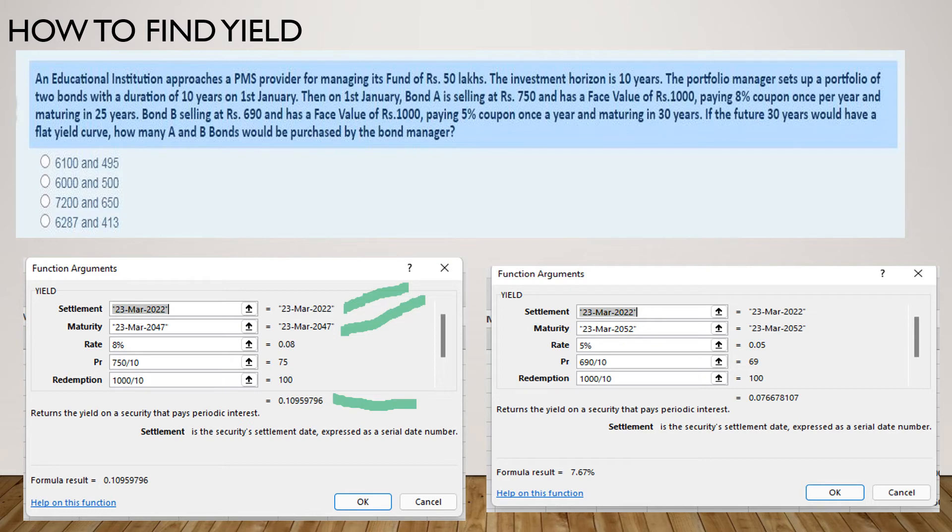If you scroll down here you will get frequency, we put frequency as 1 and then you will end up getting this particular yield which is being displayed here in number which you can convert in percentage. Similarly for the second bond which is of 30 years, you need to put the year and the date here fully. The gap should be such that it is 30 years.